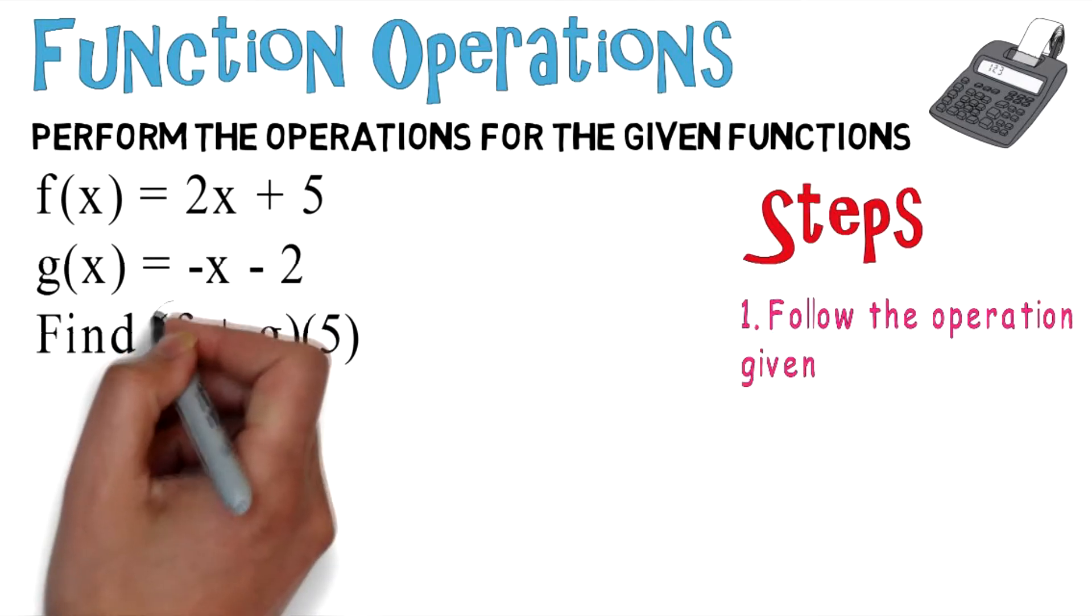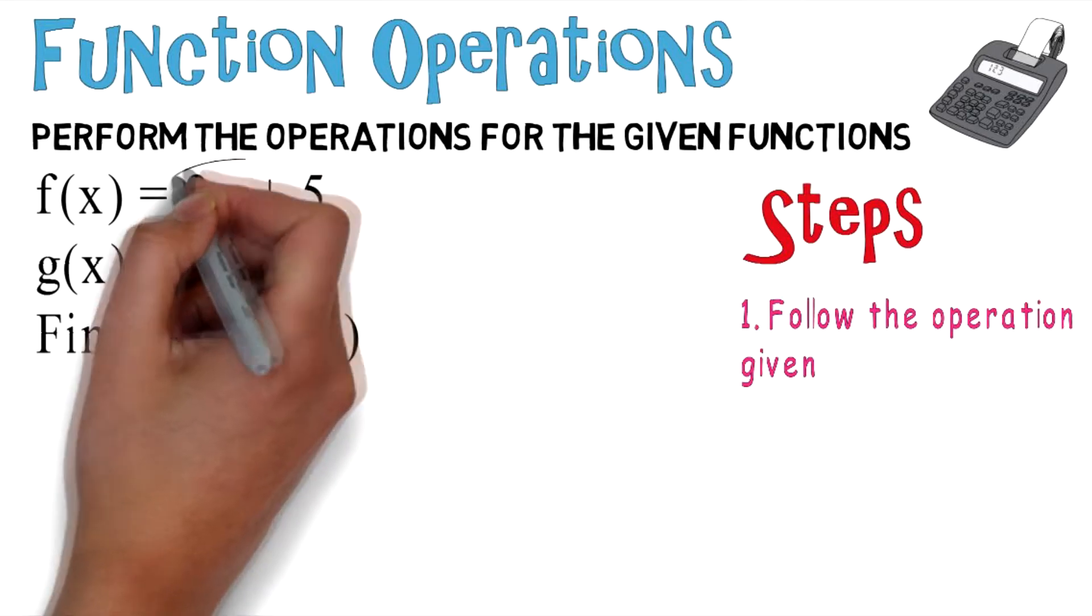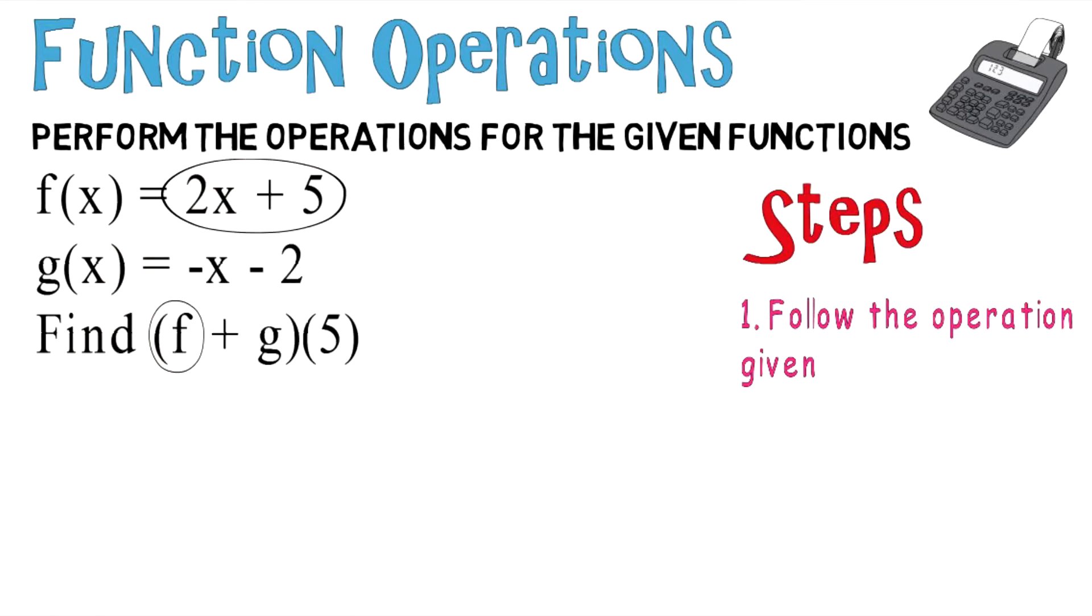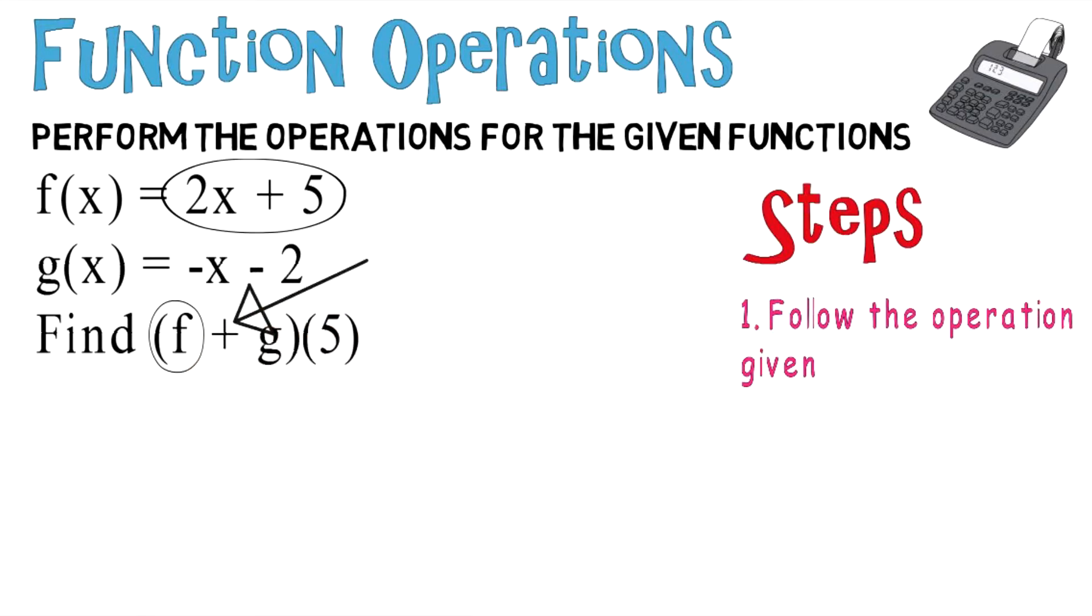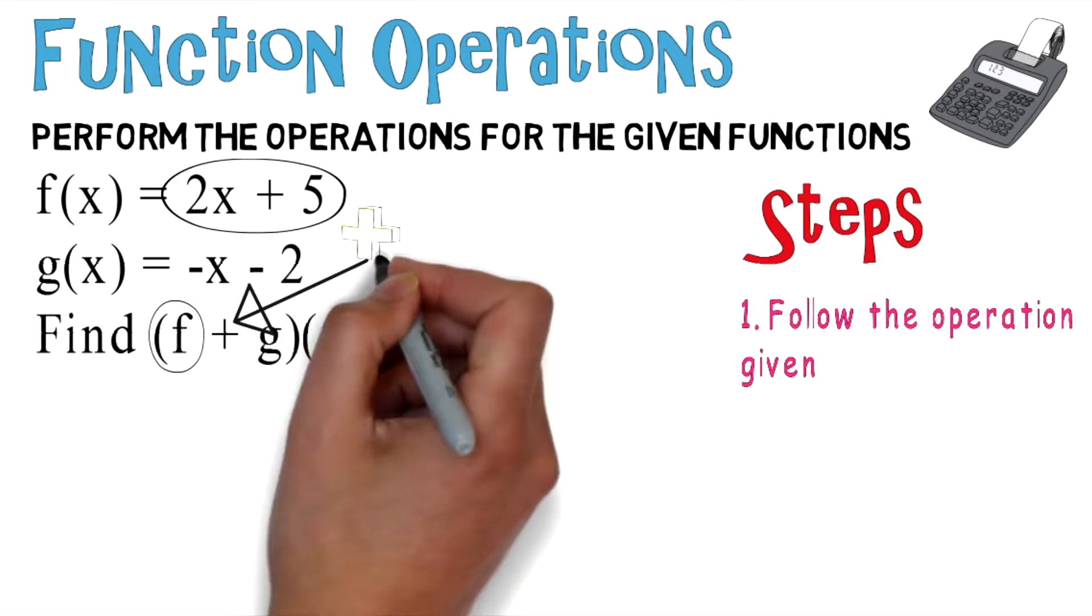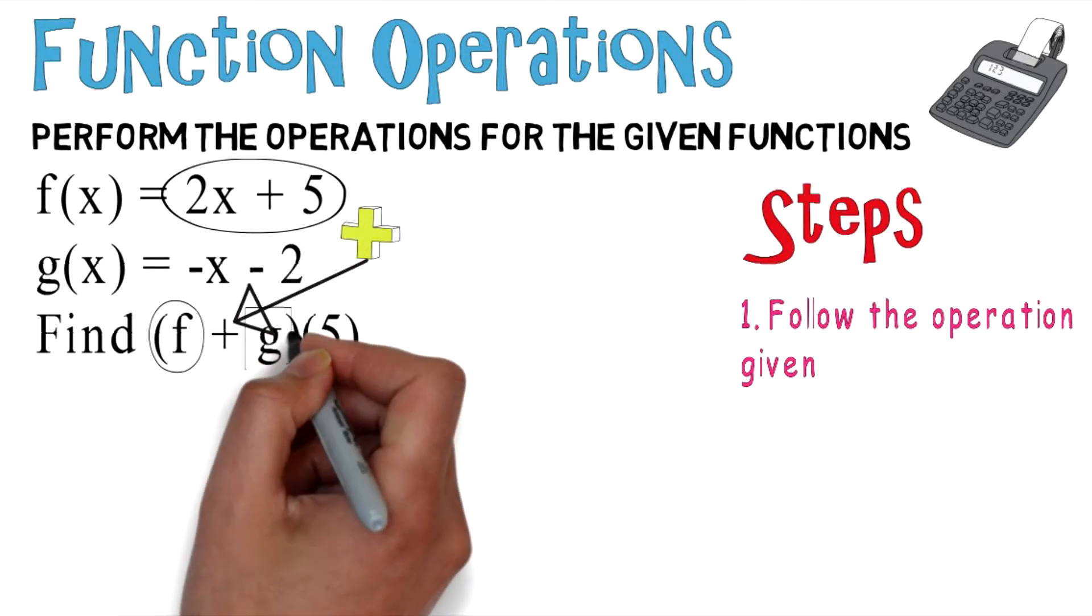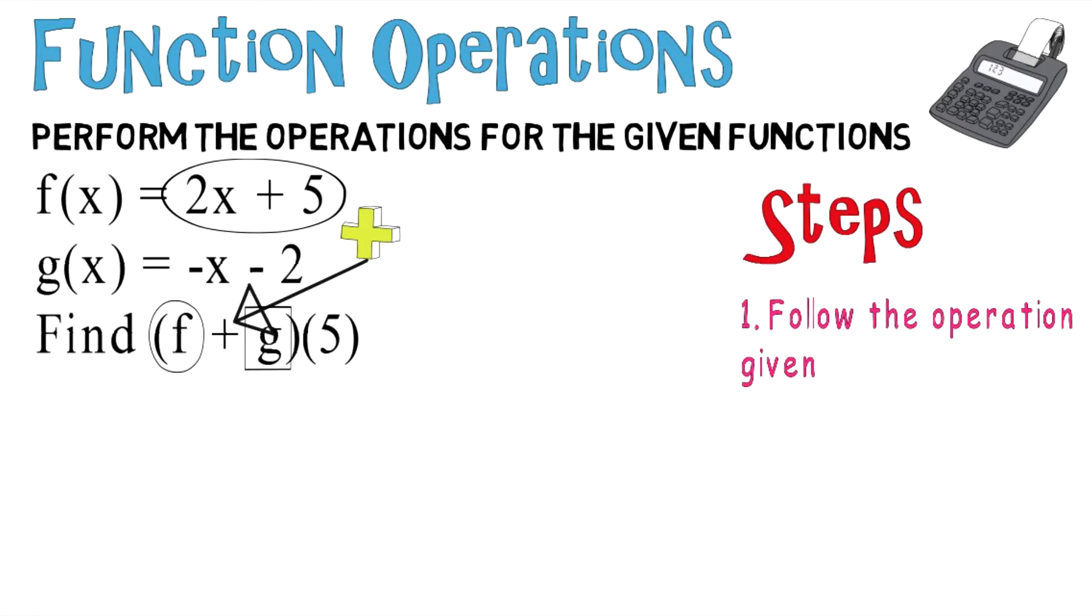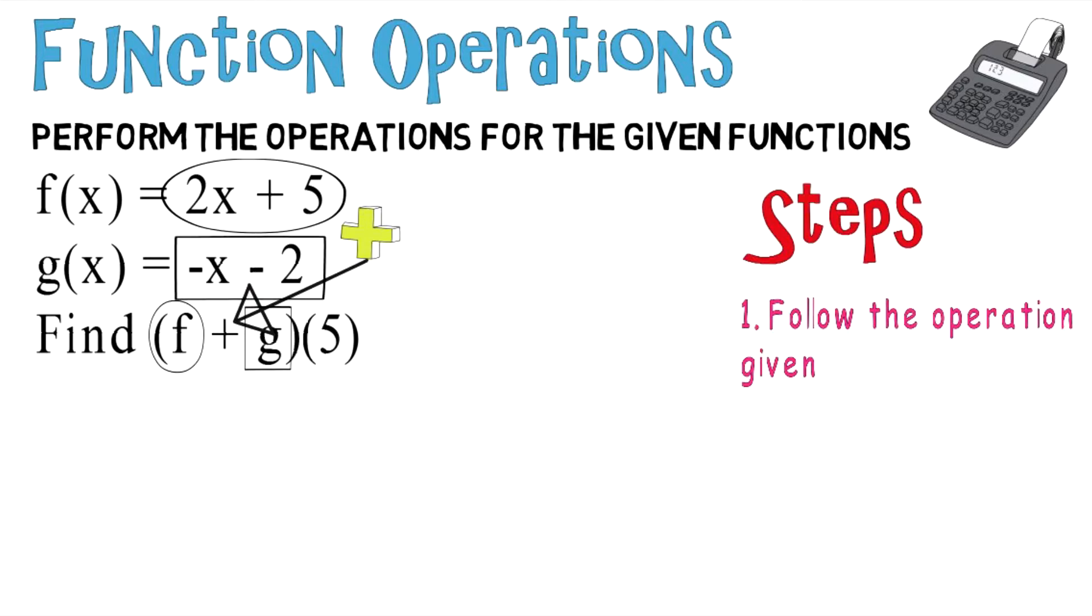Notice what it says. It says f, which is 2x plus 5, is being added, as you see right here, to g. And g is negative x minus 2. So essentially, you're just going to add two functions together and see what you get.